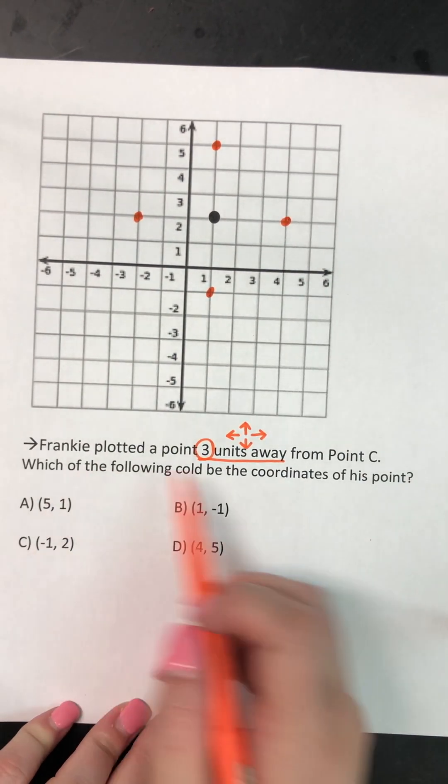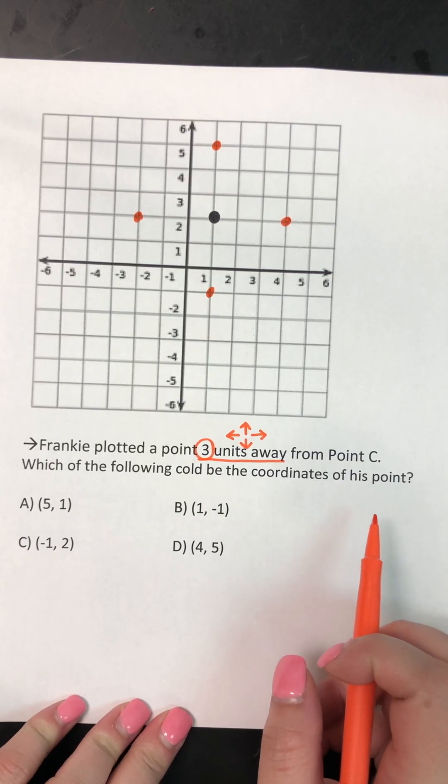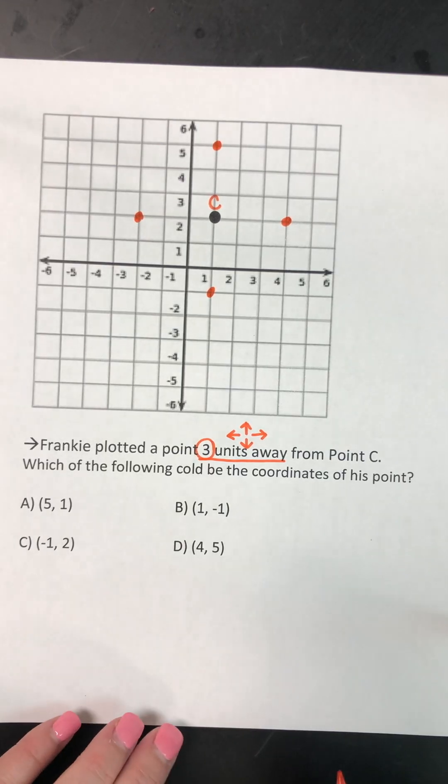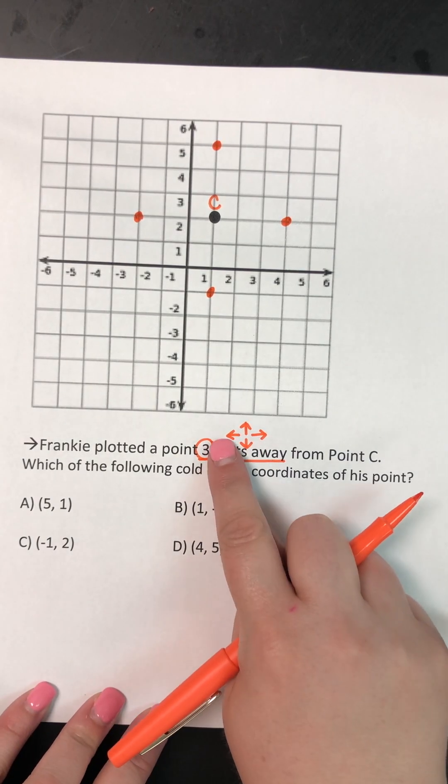So those are the four locations that Frankie could have plotted his point. Okay, because point C is here in the middle, and that's all three units away. Again, we can only move up, down, left, or right.